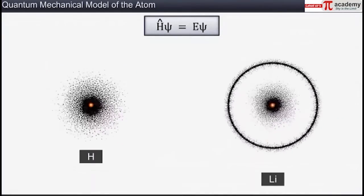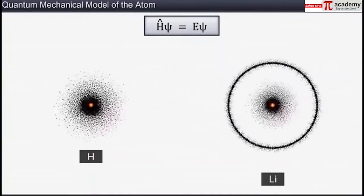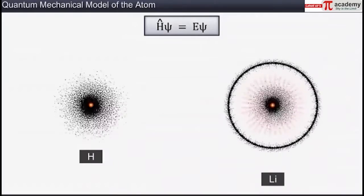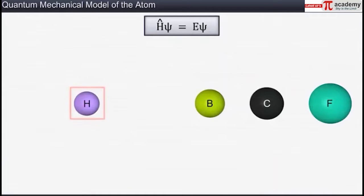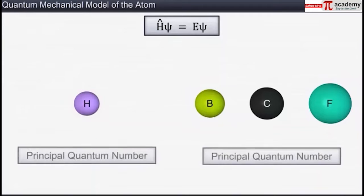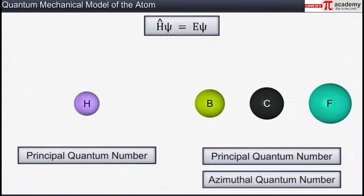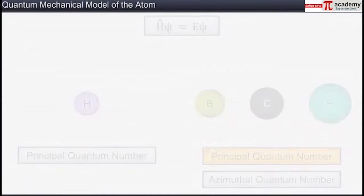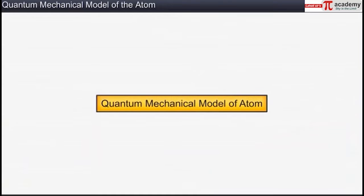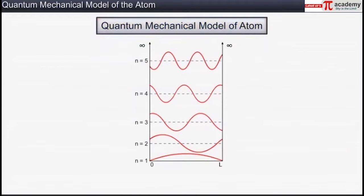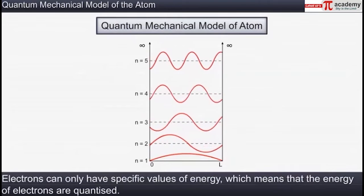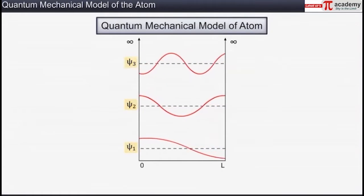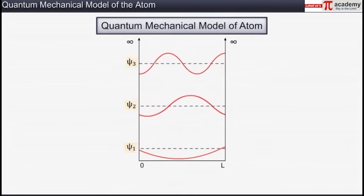The principal difference between orbitals of single-electron atoms and multi-electron atoms is that the orbitals of multi-electron atoms are contracted due to increased nuclear charge. Unlike orbitals of hydrogen or hydrogen-like atoms whose energies depend only on the principal quantum number, the orbital energies in multi-electron atoms also depend on the azimuthal quantum number in addition to the principal quantum number. According to the quantum mechanical model of atom, electrons can only have specific values of energy, which means that the energy of electrons is quantized. The quantized energy values that result from the wave-like properties of electrons can be calculated along with the associated wave functions psi using the Schrödinger wave equation.